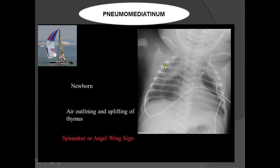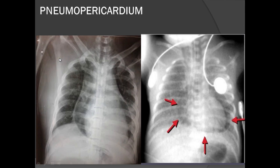In infants the thymus is a normal structure. In pneumomediastinum, air surrounds the thymus on both sides, producing the spinnaker or angel-wing sign. Additionally, pneumopericardium occurs when air surrounds the heart within the pericardial sac, causing a compression or tamponade effect — the patient may have muffled heart sounds and a serious emergency results.